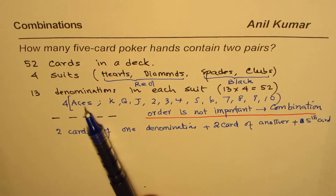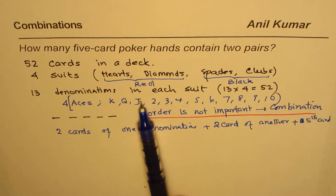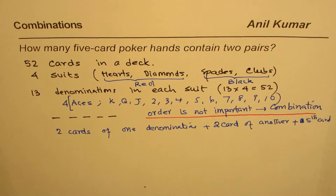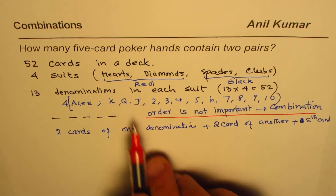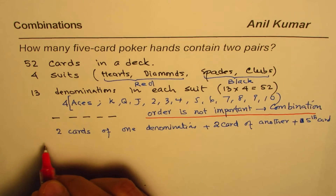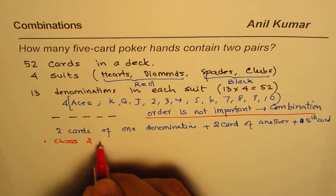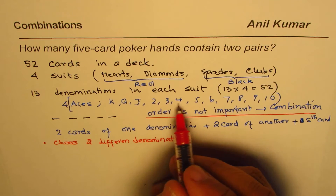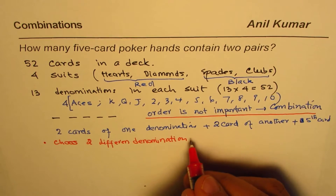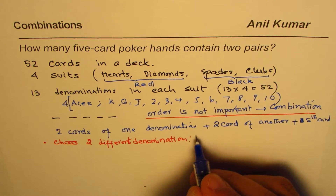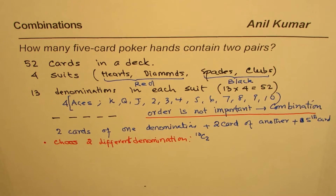You cannot have three aces — so two cards of one denomination, two cards of another denomination, and the fifth card is some other denomination. The first step is to choose two different denominations. You're choosing two denominations from 13, so the number of ways is 13C2.